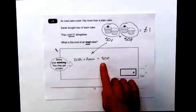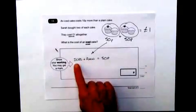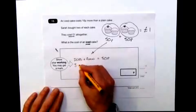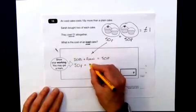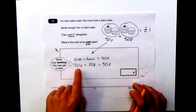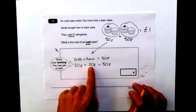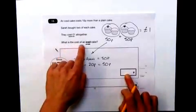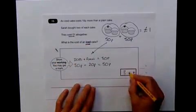Well, an easy way to make 50p is to say 30p plus 20p equals 50p, equal to my 50. And indeed, that then means that the iced cake is 10p more than the plain cake. So therefore, the cost of an iced cake is indeed 30p.